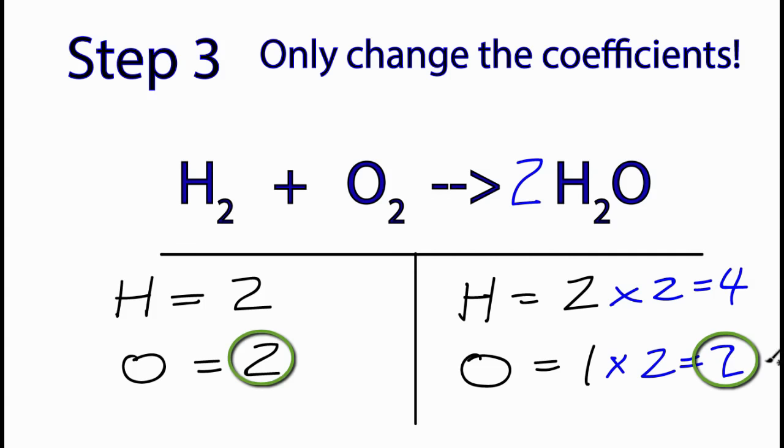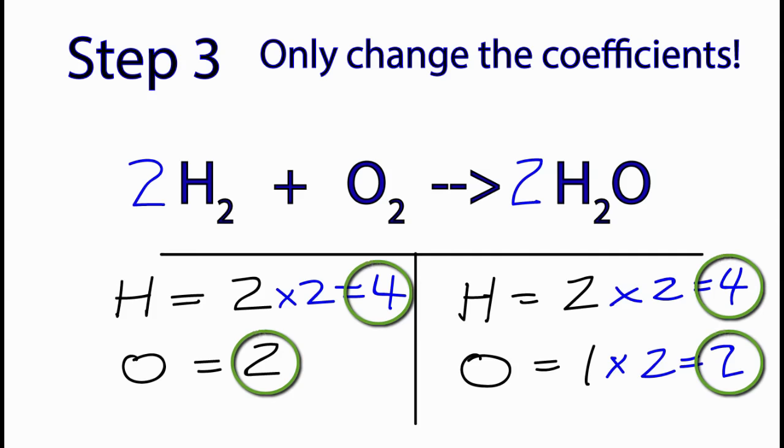What I can do over here is put a two in front of hydrogen, and now two times two, that'll give me four. And now the atoms on each side of the equation are the same. This equation's balanced.